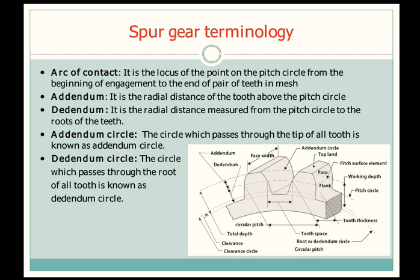Next is addendum circle. The circle which passes through the tip of all the teeth is known as the addendum circle — it is the circle that runs along the tip of all gear teeth. Next is dedendum circle. The circle which passes through the root of all the teeth is known as the dedendum circle — it runs along the bottommost point of all the teeth. Both addendum circle and dedendum circle are clearly shown in the figure.